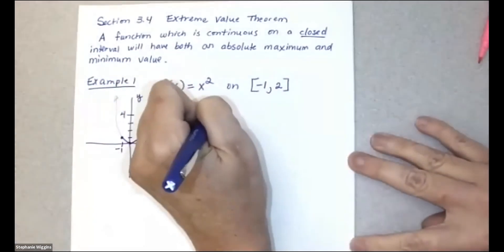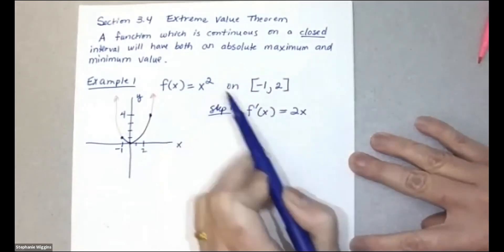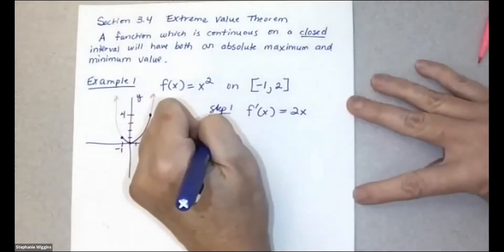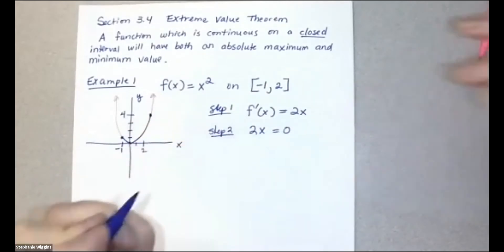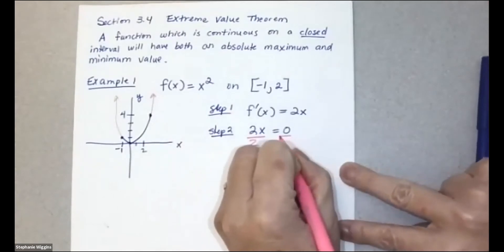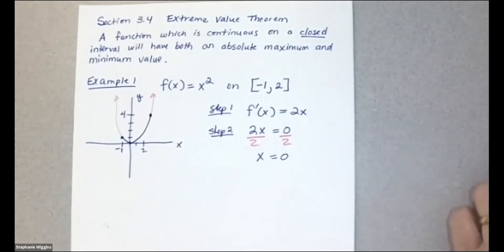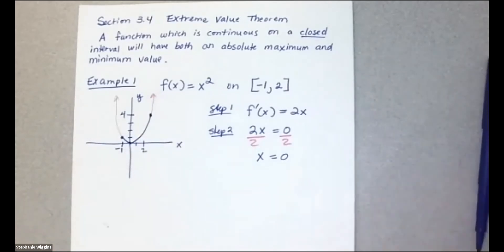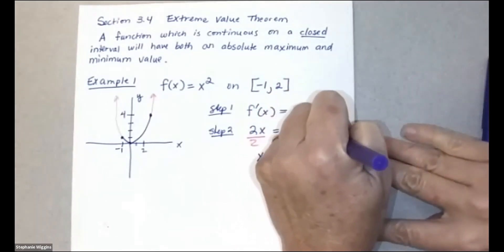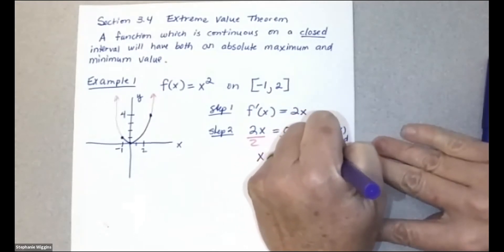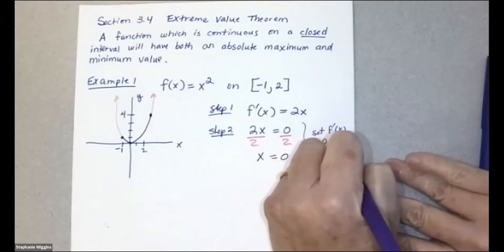The first step is to find the derivative of your function. For f(x) = x squared, the derivative is 2x. The second step is to set the derivative equal to zero: 2x = 0, and solve. Dividing both sides by two gives x equals zero. Setting f′(x) equal to zero and solving for x is how we find the critical point — so x = 0 is a critical value.